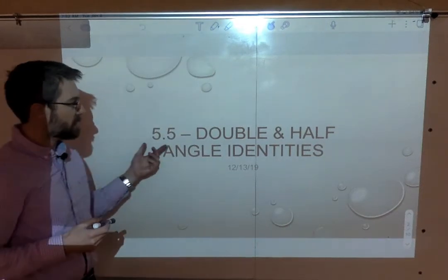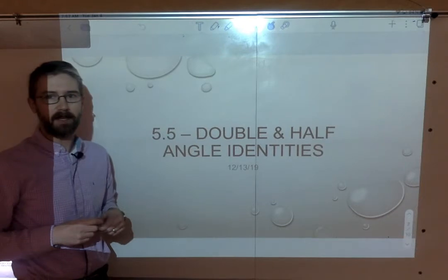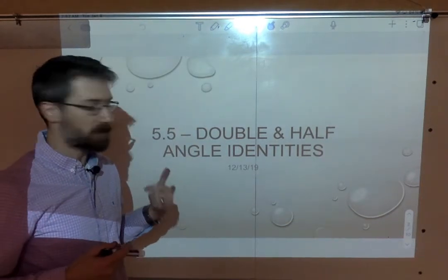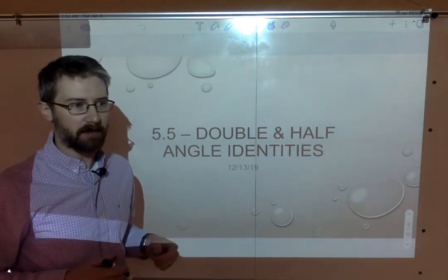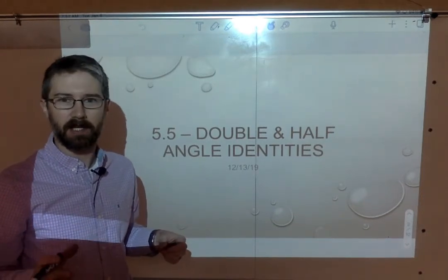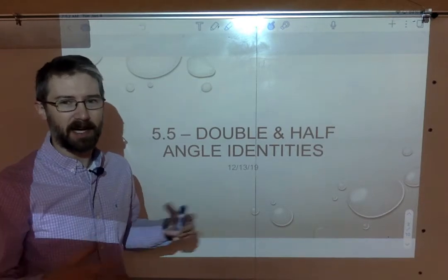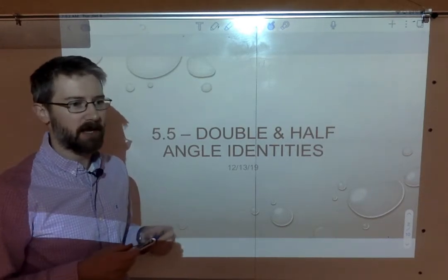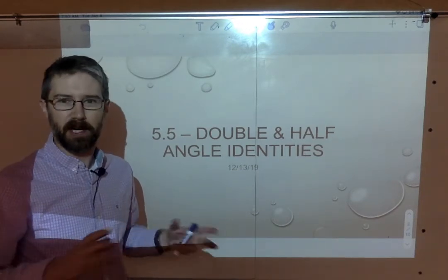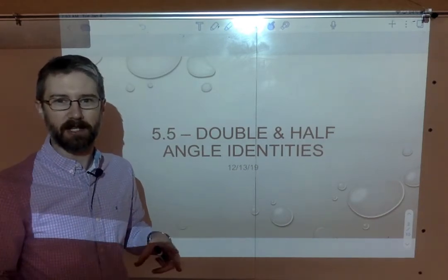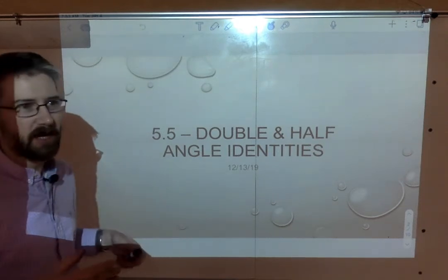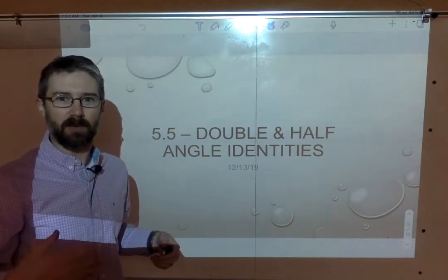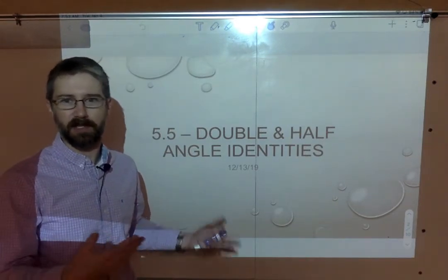Hey guys, it's Mr. Gron. This lesson is 5.5 Double and Half Angle Identities. This is going to be some new formulas that you'll use to solve some particular types of trig problems that are somewhat complicated — multi-step problems, tying a couple of different things together, kind of like what we've been doing in chapter five, as well as some simplifying that's fairly complex using square roots and fractions inside of square roots. It's good to have this complicated of an equation as preparation for calculus, where things get a little bit tougher.